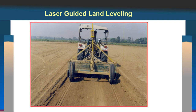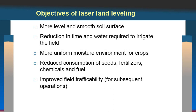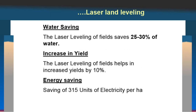Laser guided land leveling is required to make fields level so that water can be saved. This practice has been very widely adopted by farmers in Uttar Pradesh, Punjab, Haryana, Maharashtra, Madhya Pradesh — almost every state — with farmers getting their land leveled every three to four years. Objectives are to make a more level and smooth soil surface. Benefits include: water saving because fields are at zero grade with no slope, increased yield, and energy saving. Overall it gives benefits and farmers have adopted it widely.